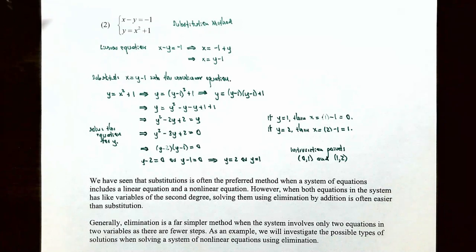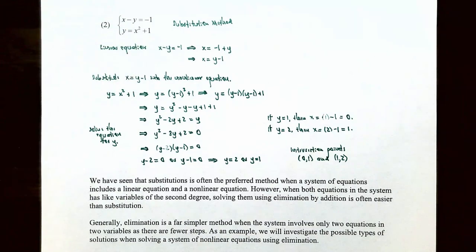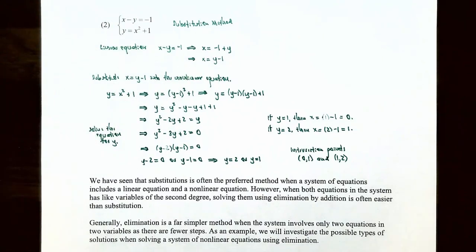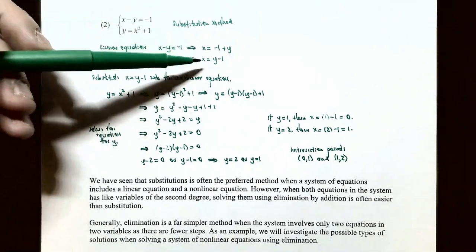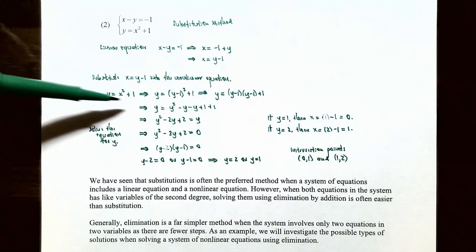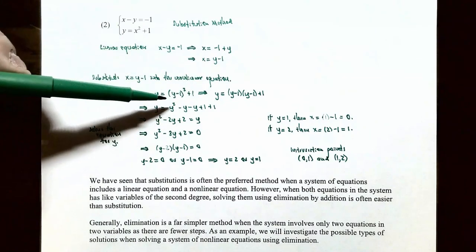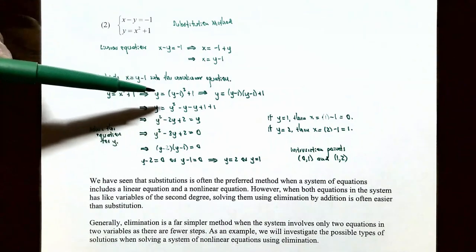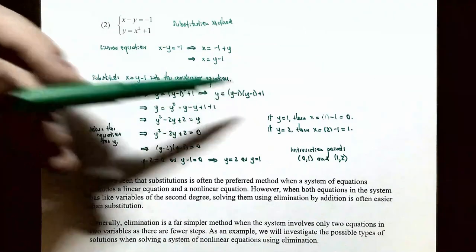Problem two: solve the system x − y = −1 and y = x² + 1 using substitution. The linear equation x − y = −1 gives x = y − 1. Substitute x = y − 1 into the non-linear equation y = x² + 1, replacing x with (y − 1) in parentheses: y = (y − 1)² + 1. Expanding using FOIL: y = y² − 2y + 1 + 1, so y = y² − 2y + 2.